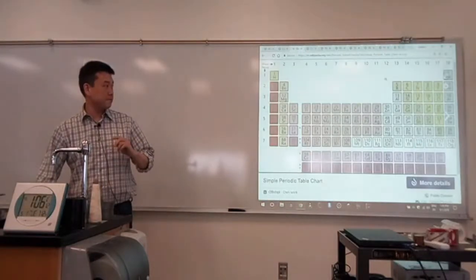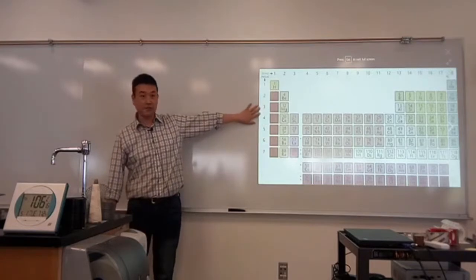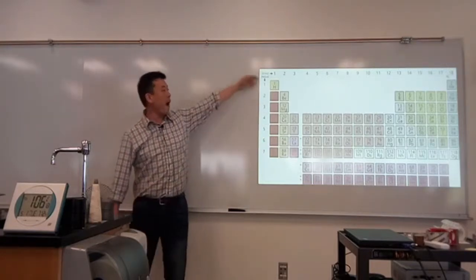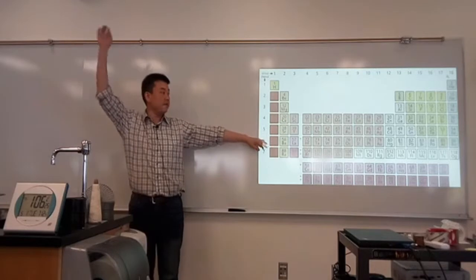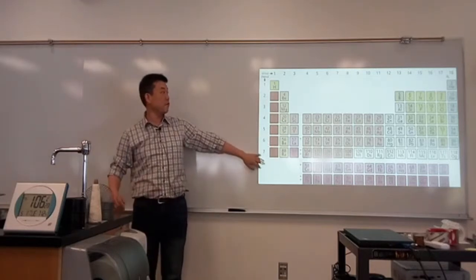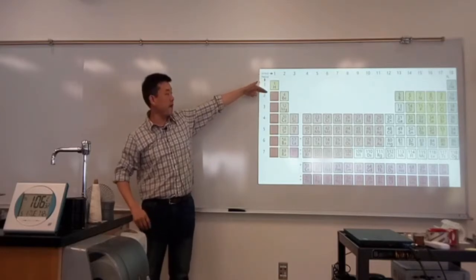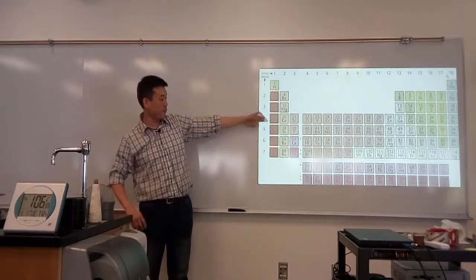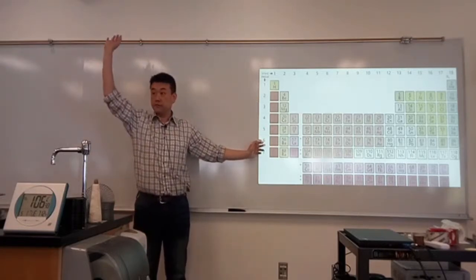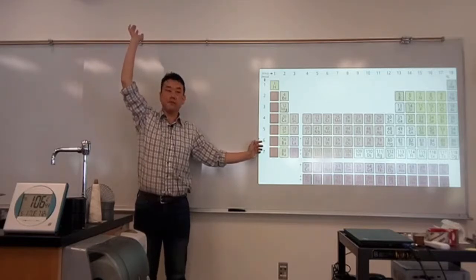How many people know why the periodic table is arranged this way? How many people know the fundamental reason behind it — why there are only two elements on the first row, eight on the second and third rows, and more on the fourth, fifth, and sixth rows? Could you raise your hand? I'm trying to see how many people we are missing.